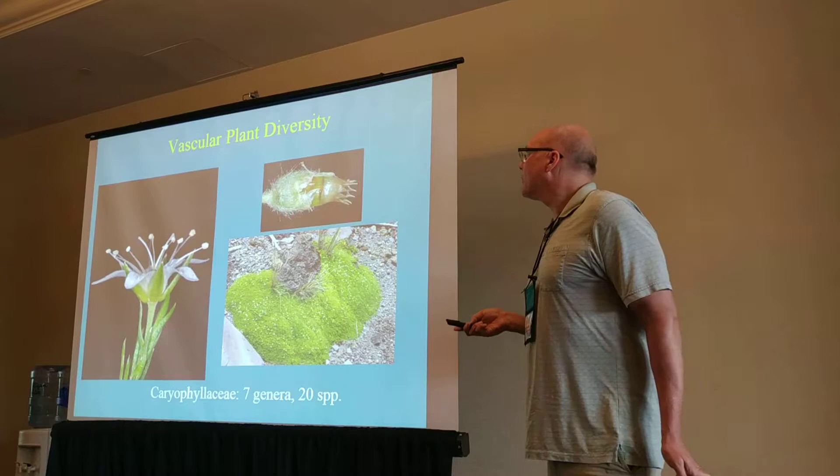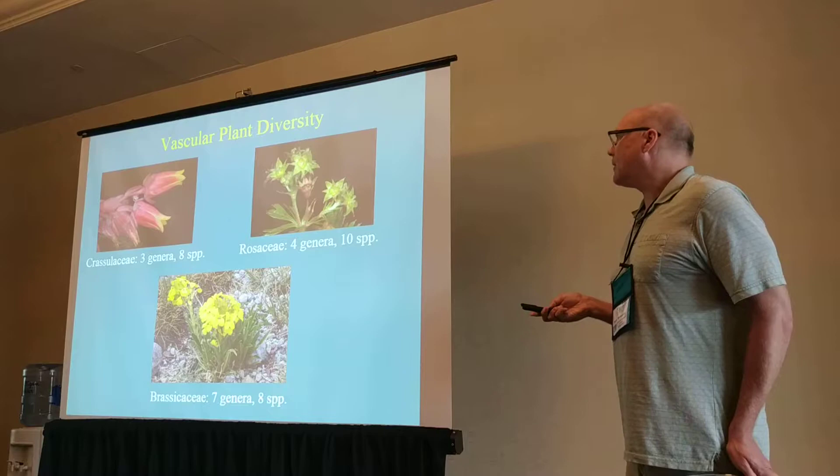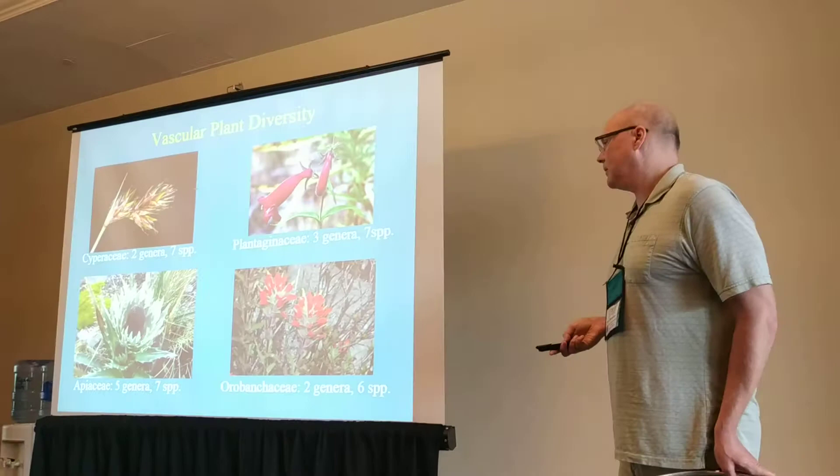Some of the other frequent families are the Crassulaceae, Rosaceae, and Brassicaceae, but none of these have more than 10 species. To round out the top 10 families, you have the sedges (Cyperaceae), Plantaginaceae, and the carrot family each with seven species, and the Orobanchaceae with six species. Most of the families only have one or two species present.